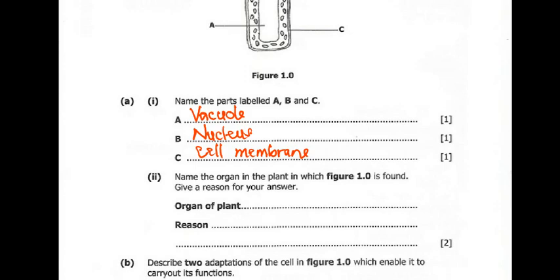Question 2 says name the organ in the plant in which figure 1.0 is found, and give a reason for your answer. The organ in which the cell is found is a leaf. Why is it a leaf? This is because the cell contains chloroplast.